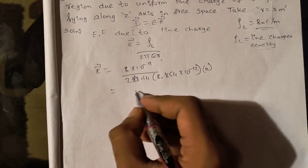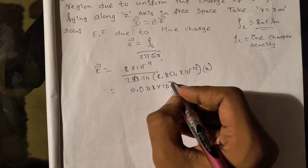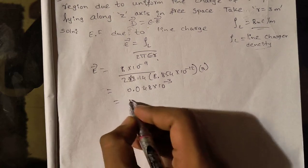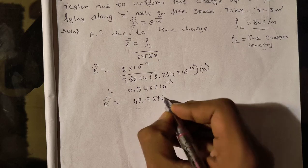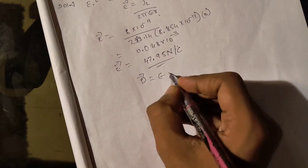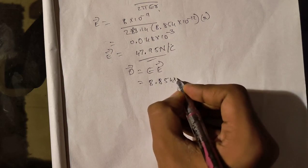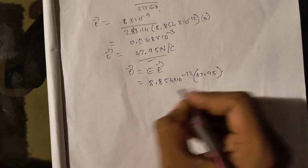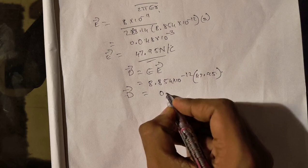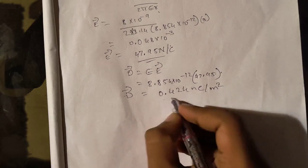And this can be written as 47.95. By solving this, we get 0.048 times 10⁻³, 0.050, and this can be written as 47.95 Newton per Coulomb. Then D equals ε₀E, and ε₀ value is 8.854 times 10⁻¹², and E is 47.95. By multiplying, we get our final answer, that is 0.424 nanocoulomb per meter square.